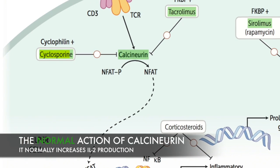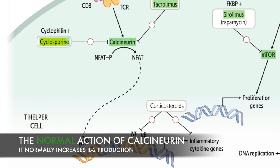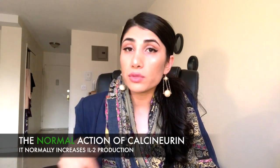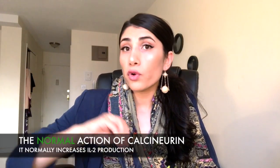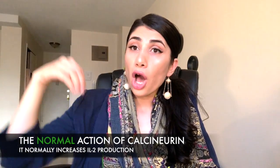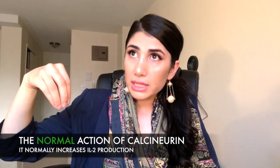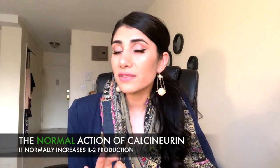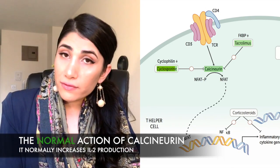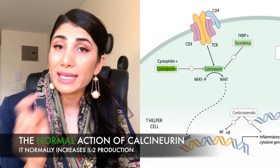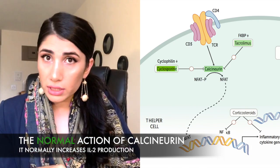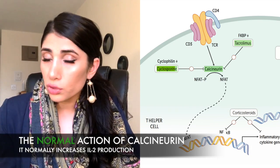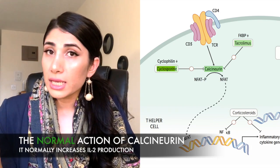Once inside the nucleus, NFAT binds to the DNA and causes proliferation of interleukin-2. Interleukin-2 is important because it produces more T-cells. It comes out of the cell and auto-regulates, stimulating the cell to produce T-cells. Because cyclosporine inhibits calcineurin, NFAT cannot be dephosphorylated, so it cannot enter the nucleus and stimulate interleukin-2 production.